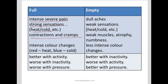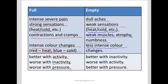In full conditions we'll get intense, severe pains and strong sensations of heat or cold. We often get contractions and cramps and intense colour changes. Full conditions are better with activity, worse with inactivity, and better with pressure. Empty conditions are more dull and achy with weak sensations — the hot and cold sensations are mild — weak muscles and atrophy, numbness, and less intense colour changes. Empty conditions tend to be better with inactivity, worse with activity, and better with pressure.